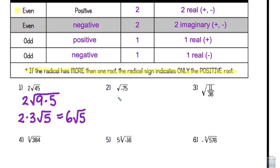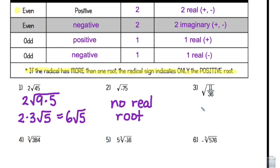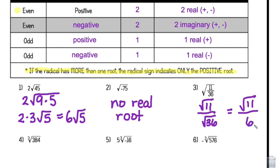Number two: I have the square root of negative 75. That's an even index and negative — we're not doing imaginary numbers, so the answer is no real root. Number three is a fraction, so it's definitely not simplified. I can't simplify the fraction inside, so I separate it: square root of 11 divided by the square root of 36. That gives me √11 divided by 6, and that is simplified.